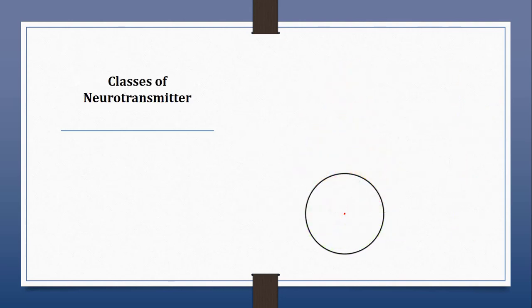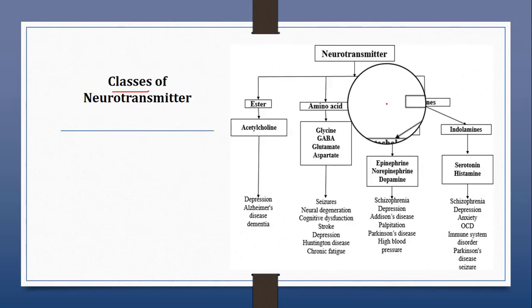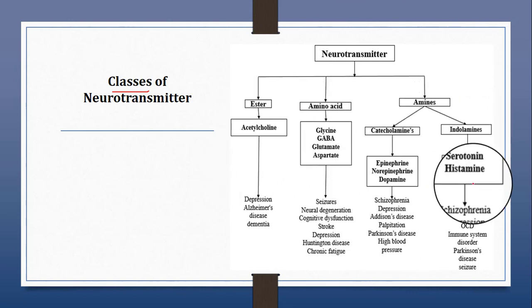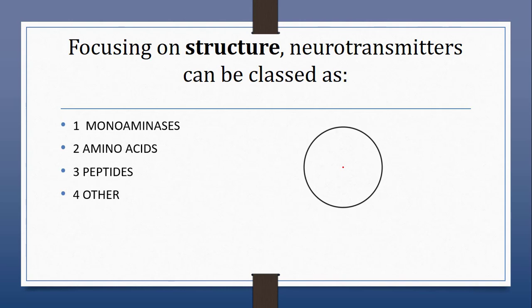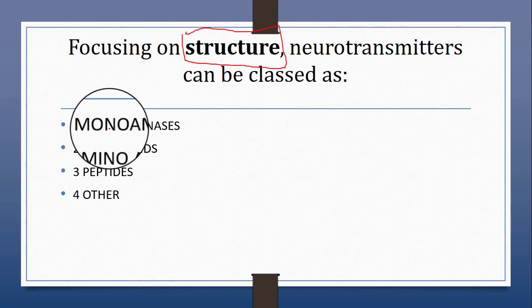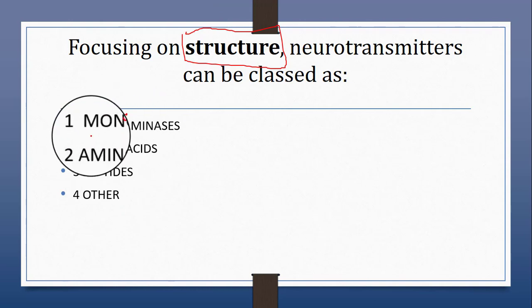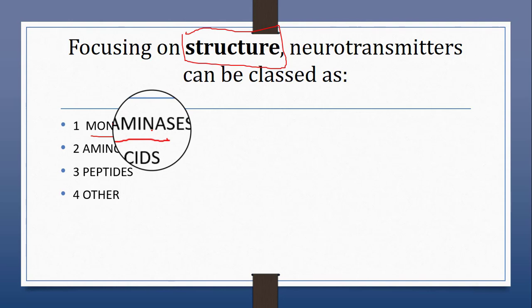Next we'll talk about the broad classification of neurotransmitters. As you can see on the screen, we have provided a picture of the broad classification. There are hundreds of neurotransmitters, but they can be grouped into classes depending on their structure and function. Focusing on structure, neurotransmitters can be classified as monoamines, amino acids, peptides, and others. Monoamines include, for example, dopamine, noradrenaline, adrenaline, histamine, and serotonin.